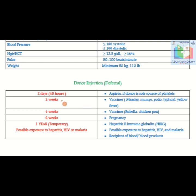A two-week deferral applies if the donor has taken a vaccine for measles, mumps, polio, typhoid, or yellow fever. Four weeks deferral applies if they have taken the vaccination for rubella or chickenpox. If the donor has had a pregnancy and delivery, we defer them for six weeks after delivery.